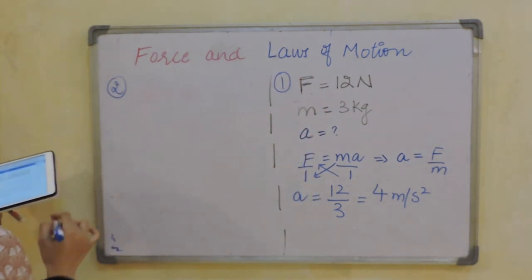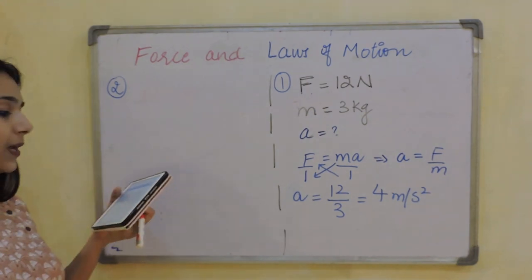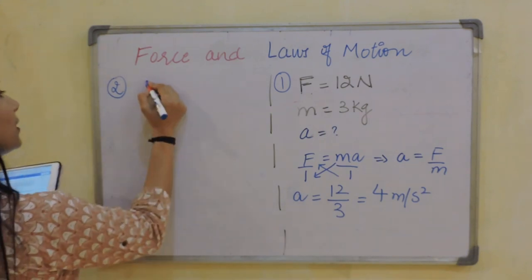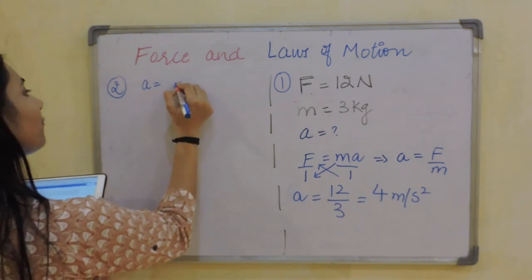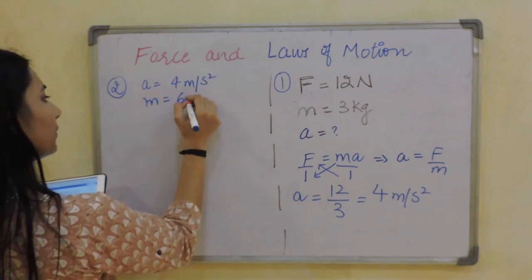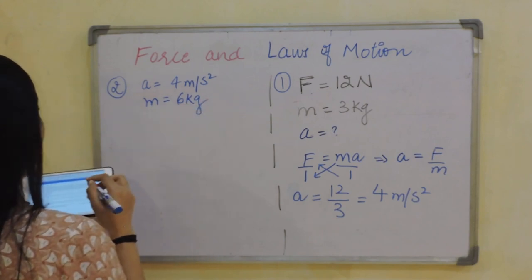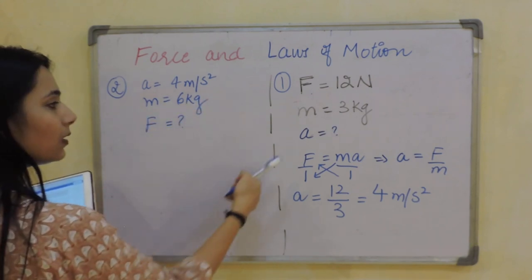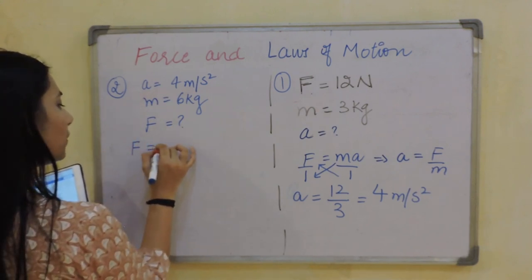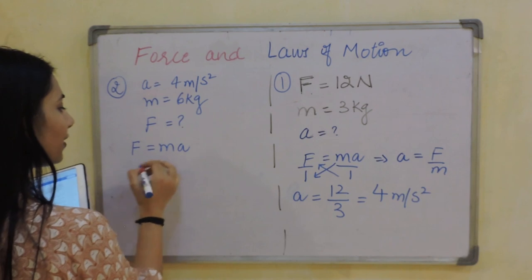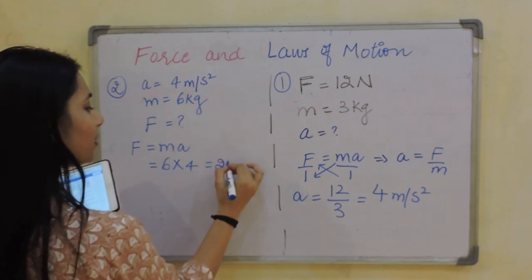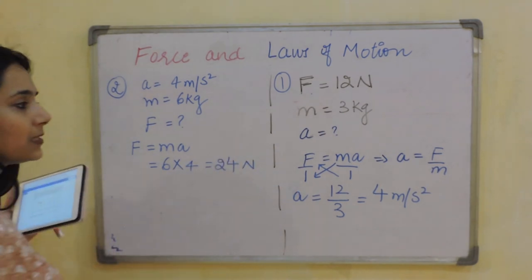The second question says: what force would be needed to produce an acceleration of 4 meter per second square on a ball of mass 6 kg? The acceleration is 4 m/s² and mass is 6 kg. According to Newton's second law, F equals MA — so F equals 6 times 4, which gives 24 Newton.